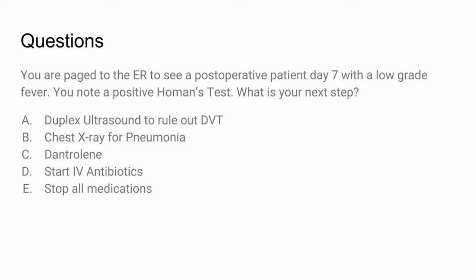Next question: You are paged to the ER to see a post-operative patient on day seven with a low-grade fever and a positive Homans test. What is your next step? The Homans test is done with the patient supine, leg elevated about 10 degrees, knee extended, then aggressively dorsiflex and squeeze the calf. A positive Homans test means you want to rule out DVT with a duplex ultrasound. Remember: DVT and pulmonary embolism are usually associated with day seven.